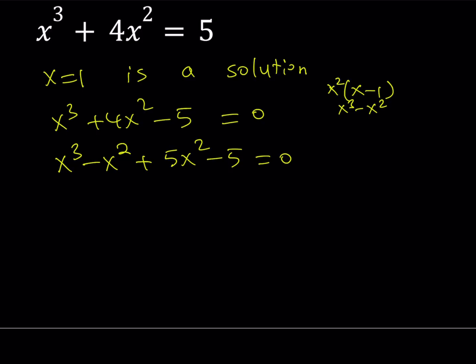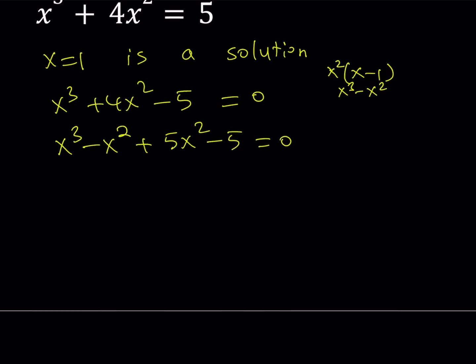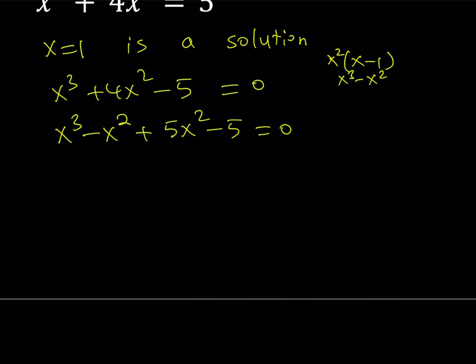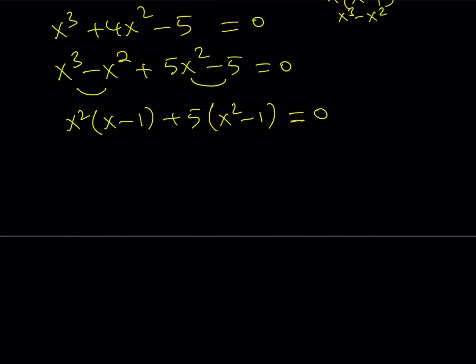That's why I'm trying to split it up. You could also do long division, synthetic division, all sorts of division to do this. Now let's go ahead and factor this by grouping. This is going to give me x squared times x minus 1 plus 5 times x squared minus 1. Now we know that x equals 1 is a solution. That kind of helps us factor this. Also, we know that x squared minus 1 is factorable by difference of two squares.